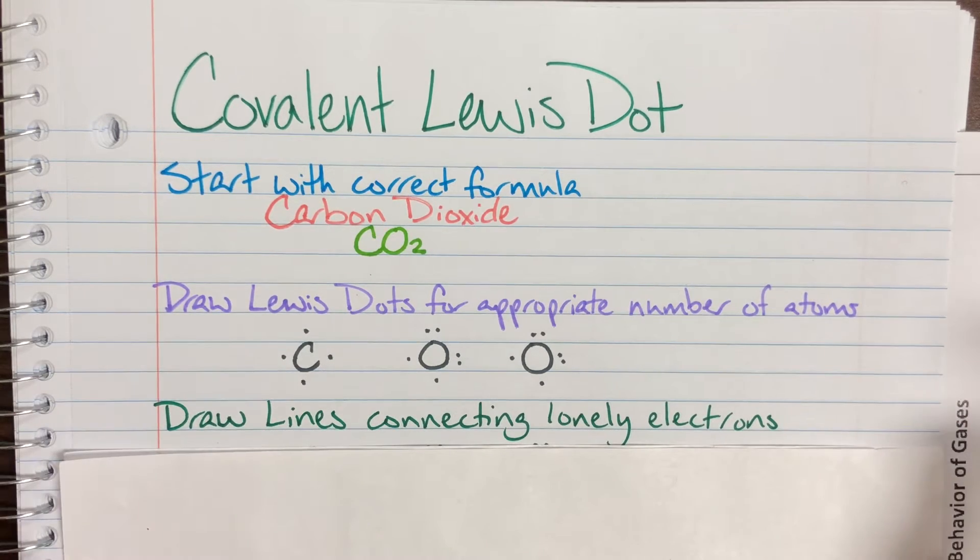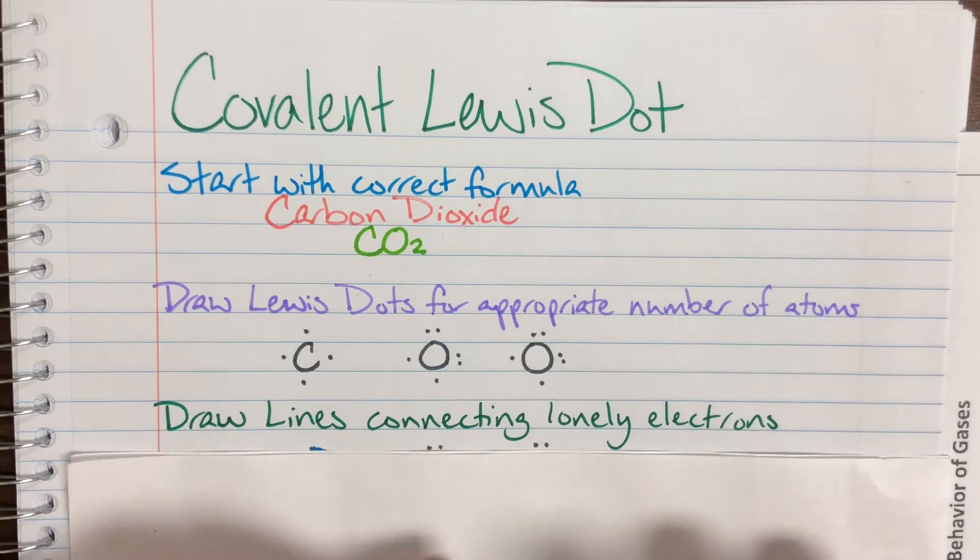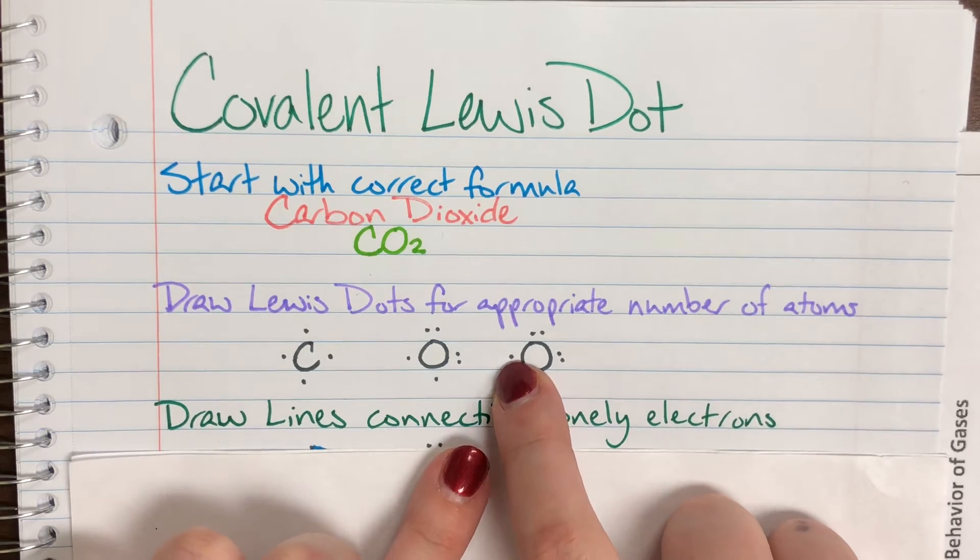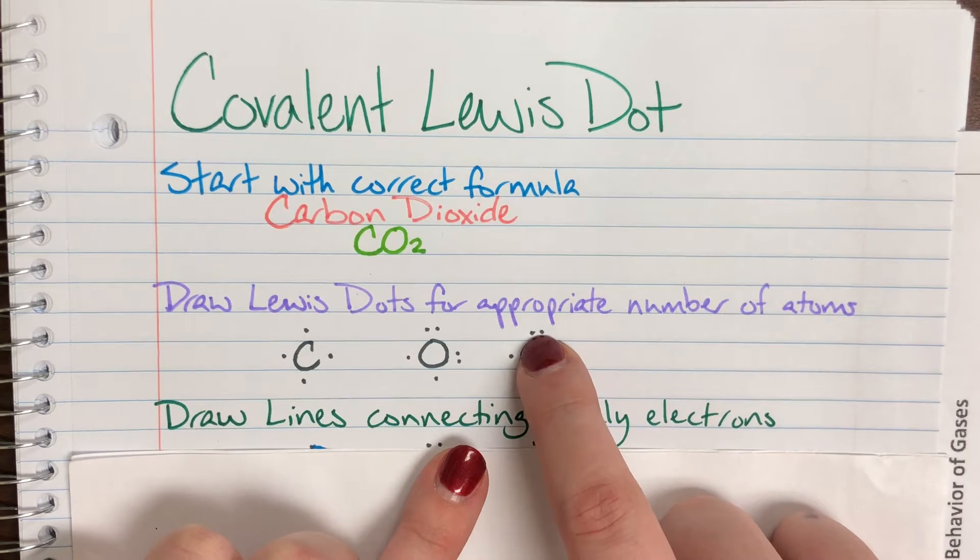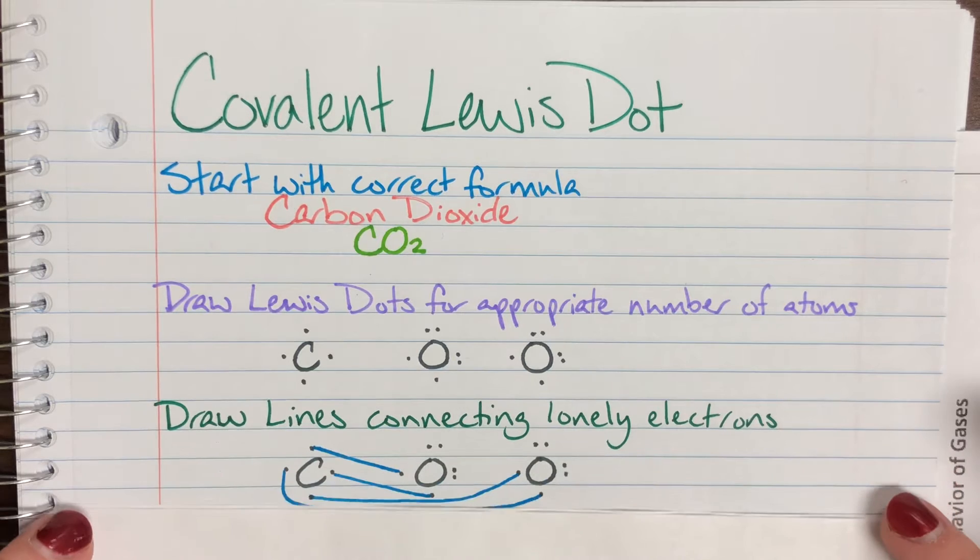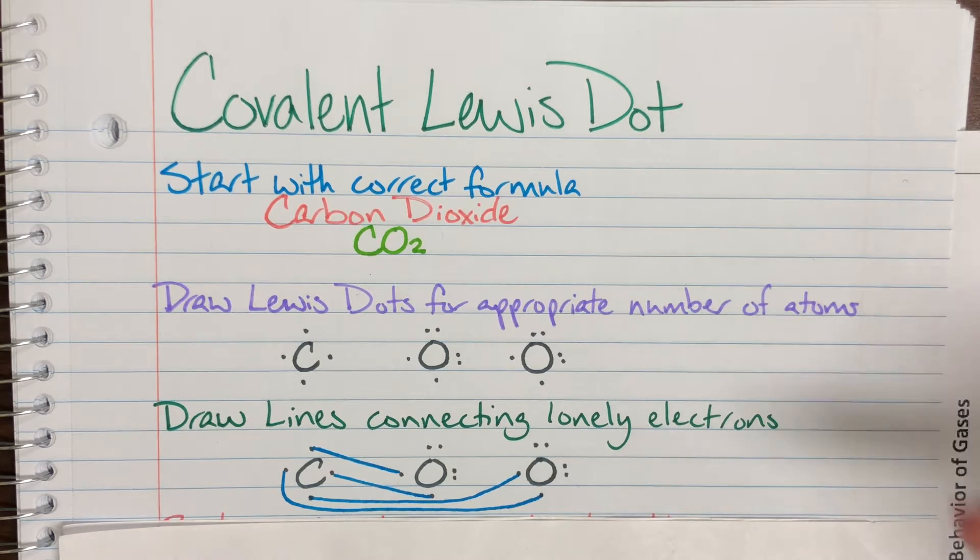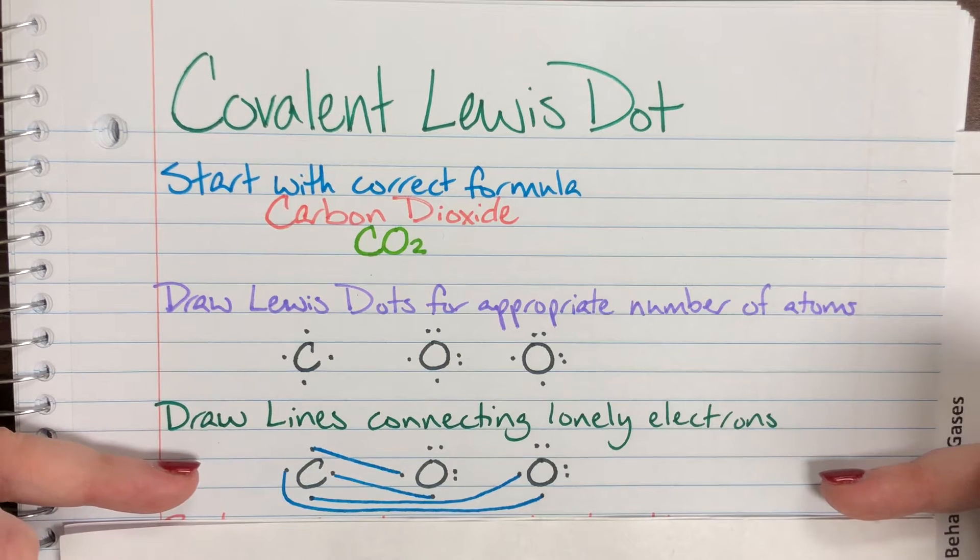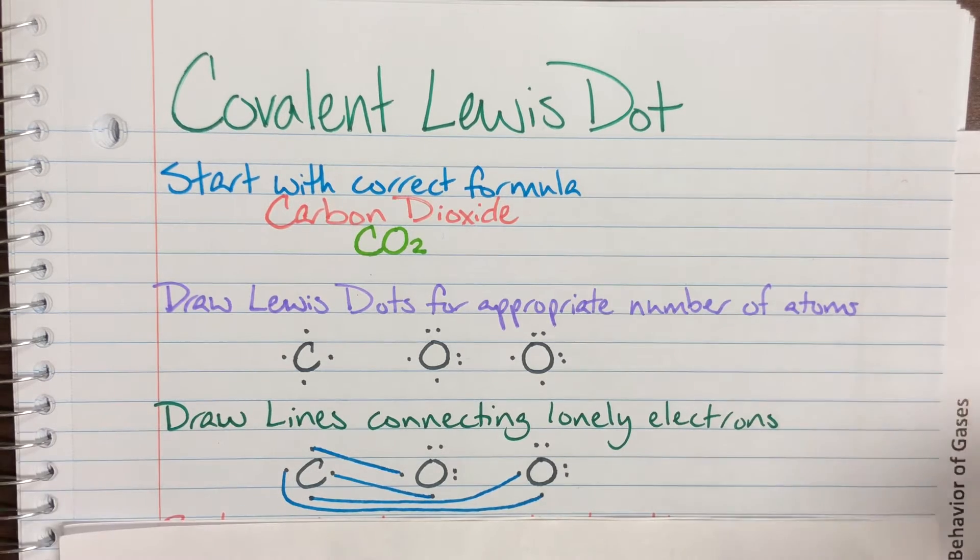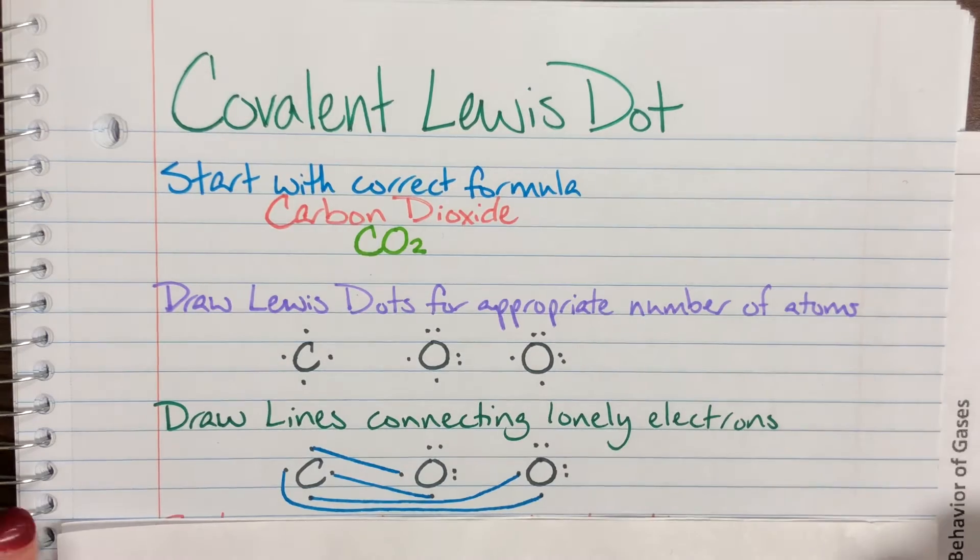Then I'm going to draw lines to connect my lonely electrons. So lines, not arrows, and my lonely electrons are going to be the ones that are not already in pairs. So this is a lonely electron, this is not a lonely electron. It might take a couple of times to actually figure out where those lines are supposed to go, so that everybody gets included and everybody has eight valence electrons. But we're going to go ahead and say first try you've got it right. So we went lonely, lonely, and we have connected all of the lonely electrons together.